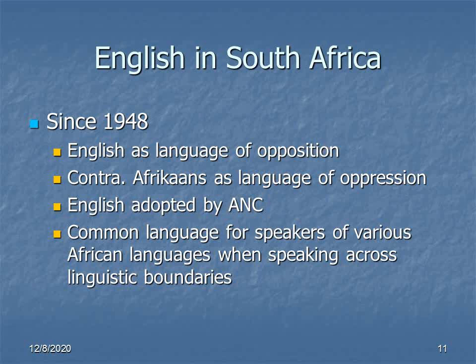The African National Congress, whose initial mission was to fight apartheid and which after the end of apartheid became one of the most important political parties in South Africa, adopted English as its official language. The reason for this is that the various other languages spoken by black South Africans were in many cases mutually incomprehensible, and English served as a lingua franca that didn't have the disadvantage of privileging one or another of the indigenous languages against all of the others. In that sense, it came to function very much as Latin functioned during the Middle Ages.